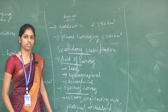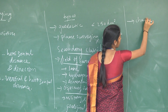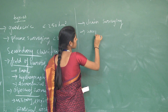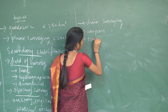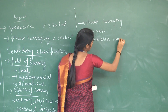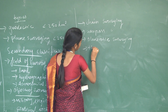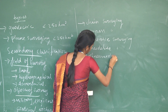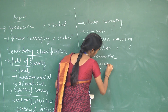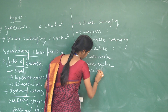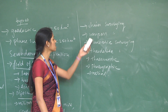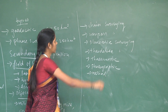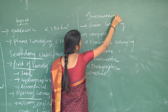Surveying is also classified based on the instruments used. If you are using a chain, it is chain surveying; a compass gives compass surveying. Based on instruments used, surveying is classified as: chain survey, compass survey, plane table survey, theodolite survey, tachymetric survey, photogrammetric survey, and aerial survey.